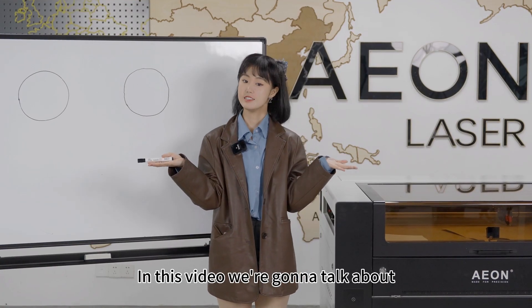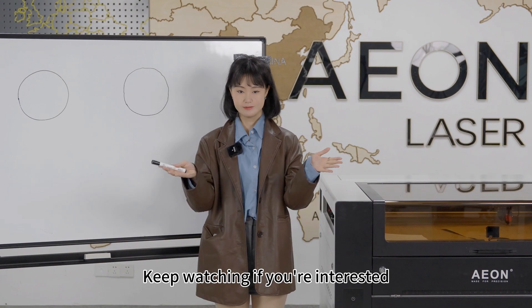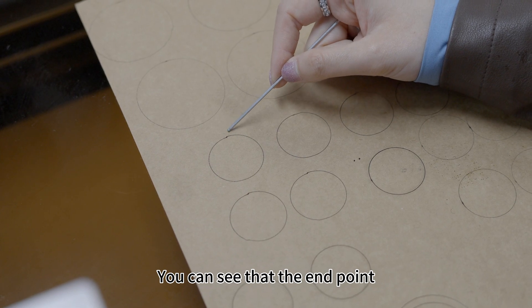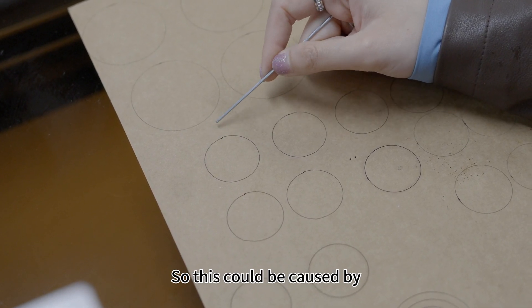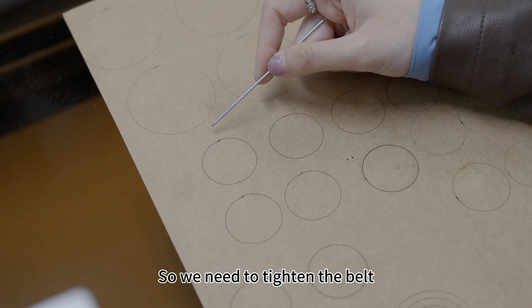In this video, we're going to talk about how to fix that from hardware and software. Keep watching if you're interested. When the circle is not really closed, you can see that the end point does not meet the beginning point. This could be caused by the loose belt of the step motor, so we need to tighten the belt.